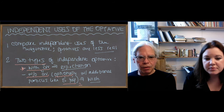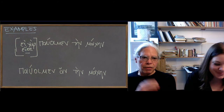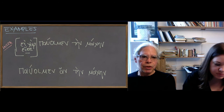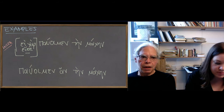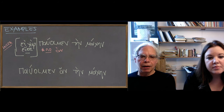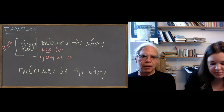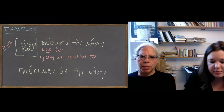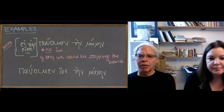Going to the blackboard, the first example has the two optional particles — that's the wish optative, the one without 'an,' where you can have 'eigar' or 'eithe.' 'Eigar' is two separate words that only occur in this kind of optative construction. The example means 'if only we could stop the battle,' or more literally 'may we be stopping the battle.' We have a present optative in 'pauo'imetha' — and remember, 'mache' means battle. It expresses a wish that something happen, and it's not that likely that it will happen, because it's an optative after all.